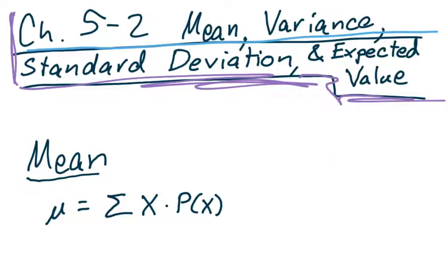We are not able to compute these values — the mean, variance, standard deviation, nor the expected value for a probability distribution — directly. Why not? Because we cannot perform this experiment an infinite number of times. In order to get the true value, we would have to continue performing this experiment — flipping a coin, an infinite number of times — and we simply cannot do that. So what we are going to be doing is making that mathematical assumption that we are going to be repeating this an infinite number of times.